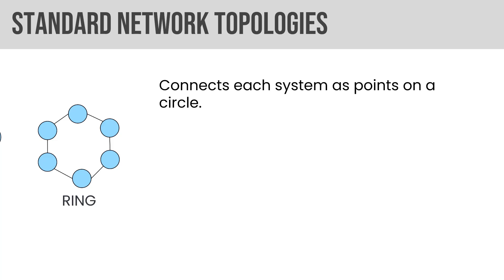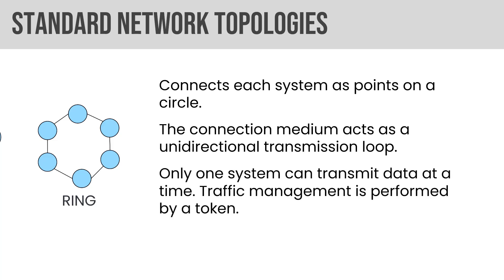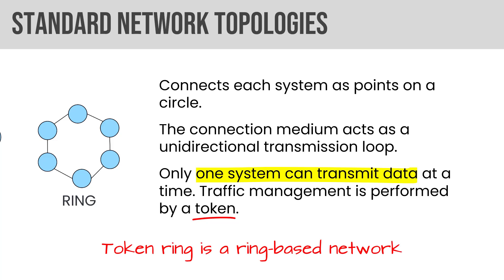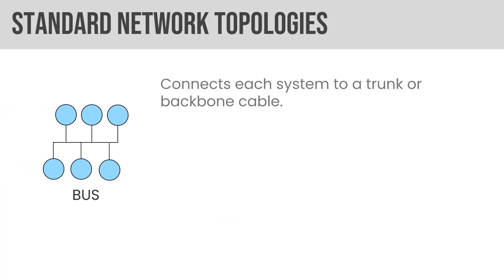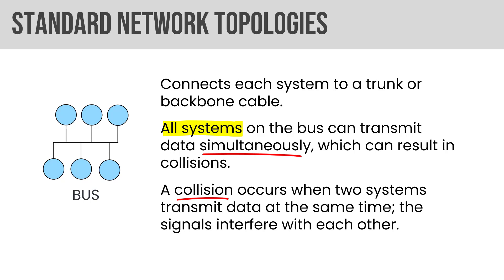A ring network connects each system as a point on a circle. The connection medium acts as a unidirectional transmission loop, meaning traffic goes one direction, and only one system can transmit data at a time — avoiding collisions because traffic management is performed by a token. Only the system with the token can transmit, so token ring networks use collision avoidance. A bus network connects each system to a trunk or backbone cable. All systems on the bus can transmit simultaneously, which means collisions can occur — Ethernet is a bus network, so it needs collision detection.